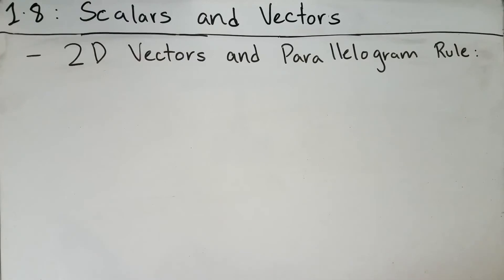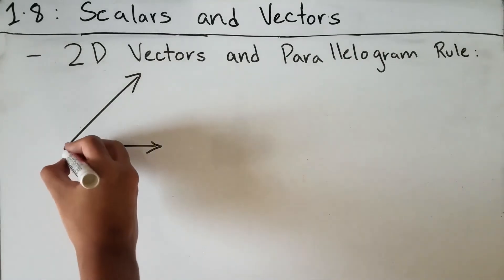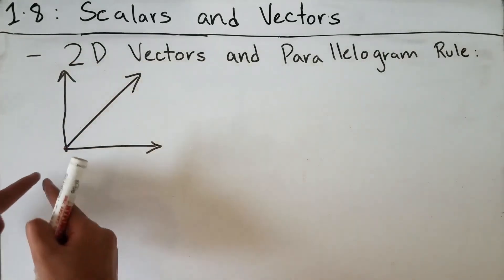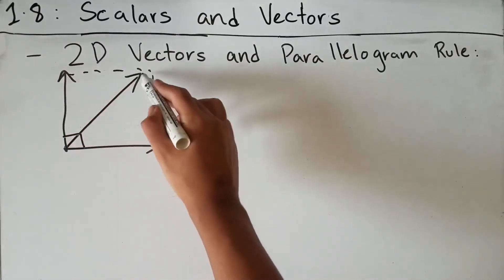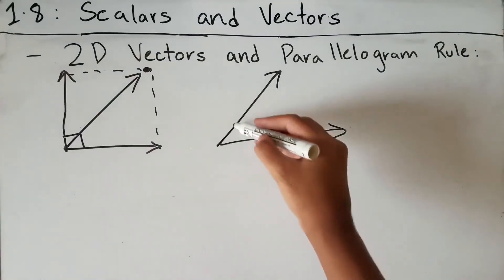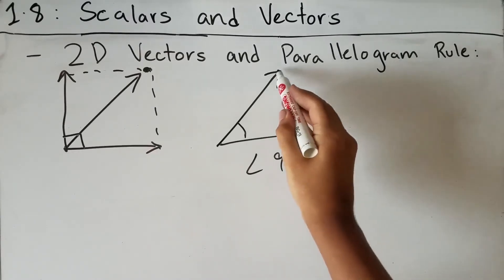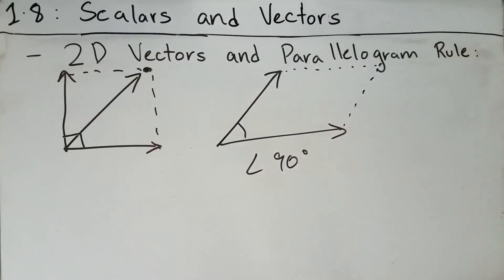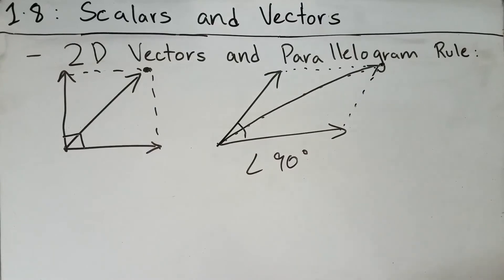So far we've calculated resultant vectors in one dimension. Now let's talk about 2D vectors and the parallelogram rule. 2D vectors occur in two dimensions — a diagonal vector has both a horizontal and vertical component. When the angle between two vectors is less than 90 degrees, we draw a parallelogram, and the resultant vector connects from the origin to the opposite corner of the parallelogram.